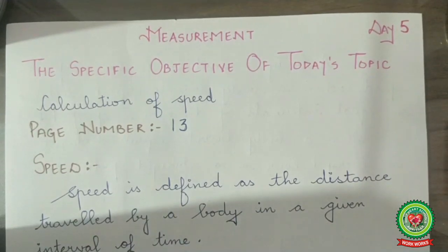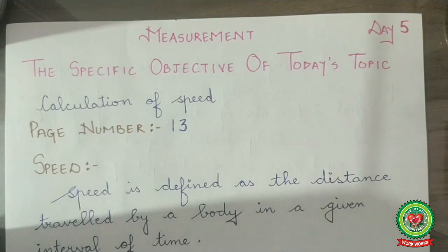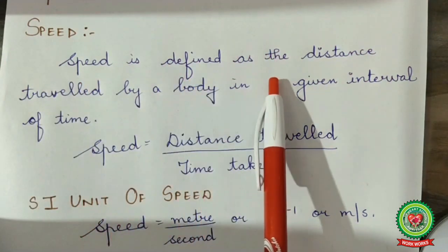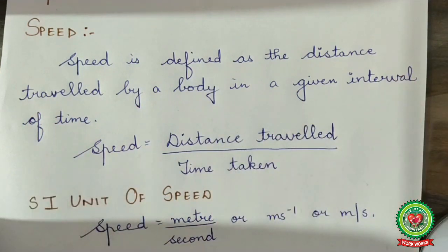In previous lectures we have discussed measurement of area, measurement of volume, and measurement of density. Now we are going to discuss speed. Speed is defined as the distance travelled by a body in a given interval of time.